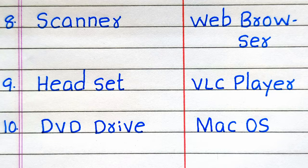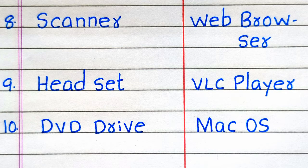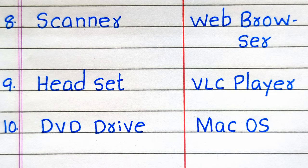Tenth example of hardware is DVD Drive. Tenth example of software is Mac Operating System, Mac OS.